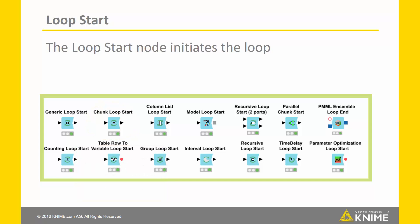Another type of subset looper is the group loop start. It sends out subsets of your data, but based on information which is already contained in your data.